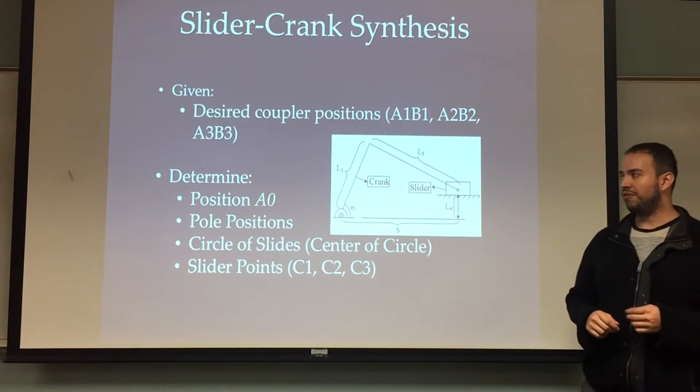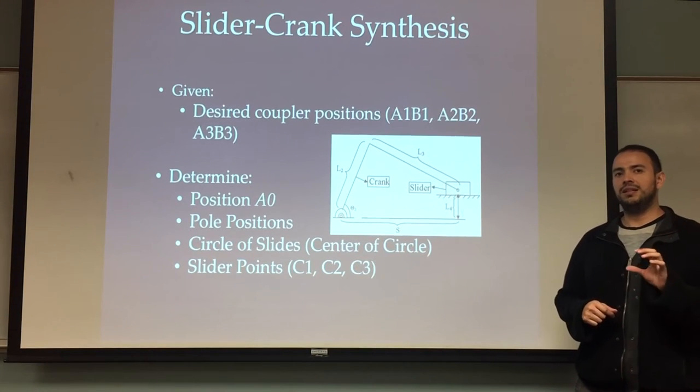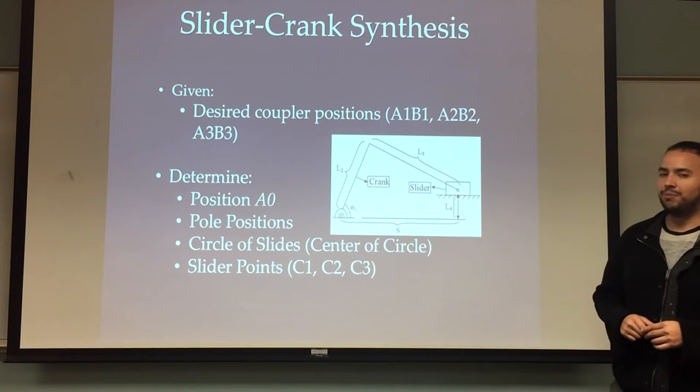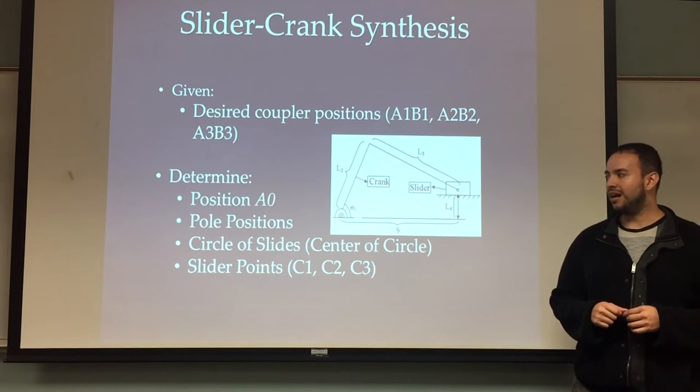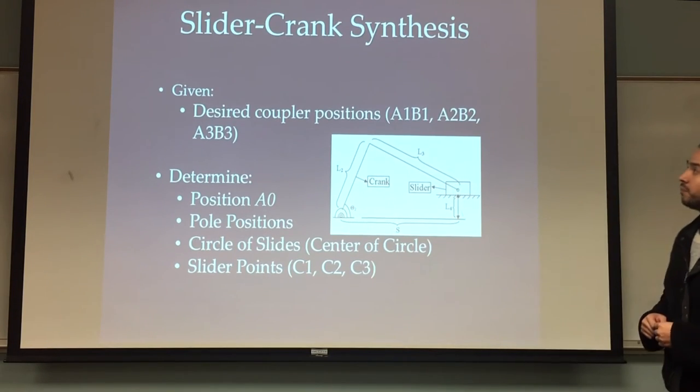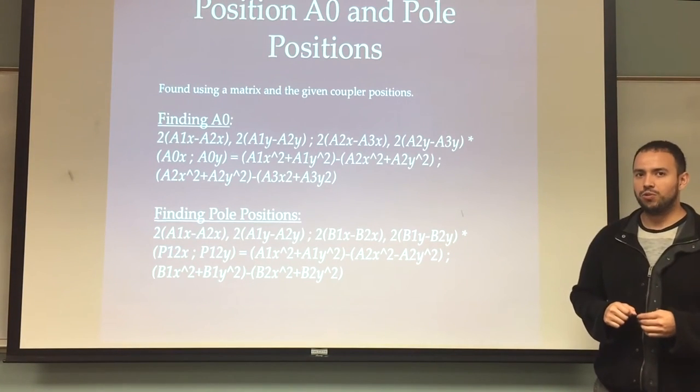We're going to determine the first thing we had to do is determine position of A0, which is the actual revolute joint that holds all the linkage together. We're going to find pole positions that are on a circle of slides, and doing so we're going to find the points along which the slider slides.